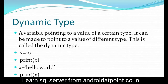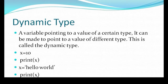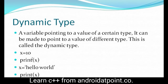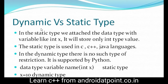With the print function we print the value of x as 10. Now I assign a string value to the x variable, and with the print function print the value of x. So I have assigned two different types — first an integer, then a string. This is dynamic typing: you can assign any type of value to a variable.